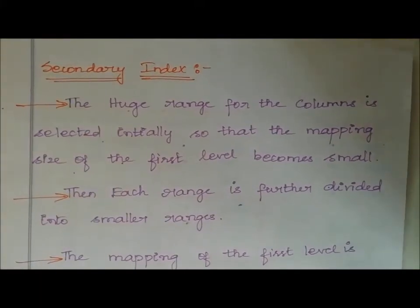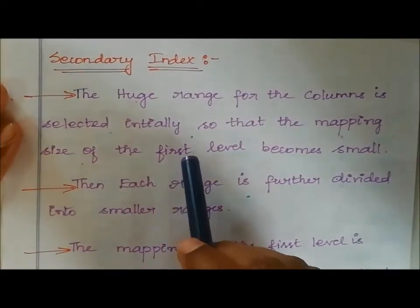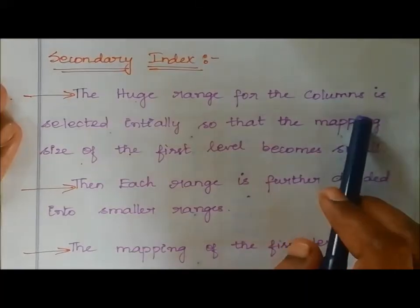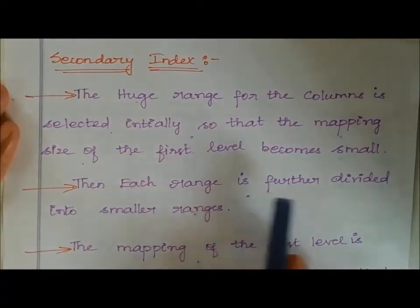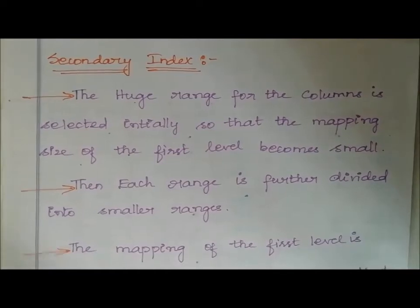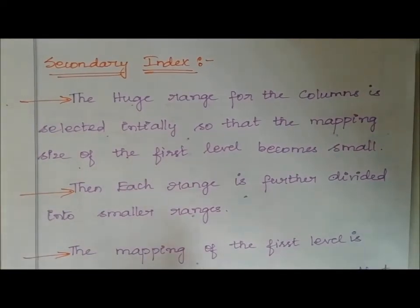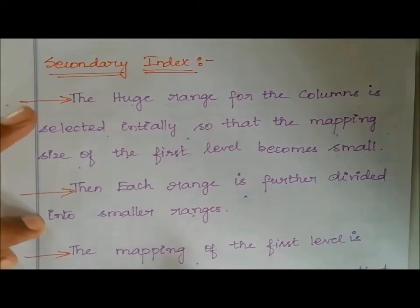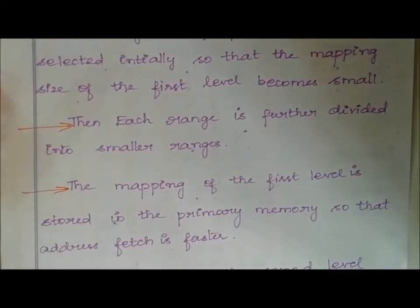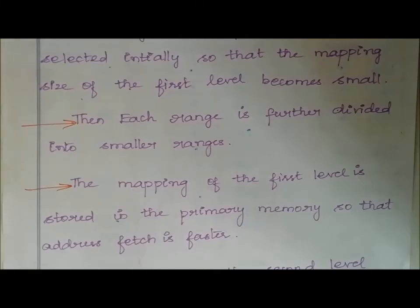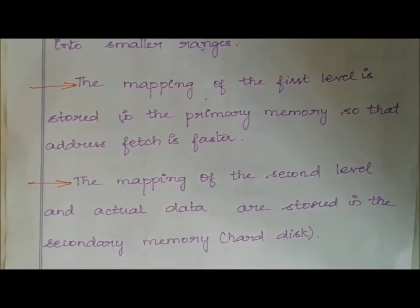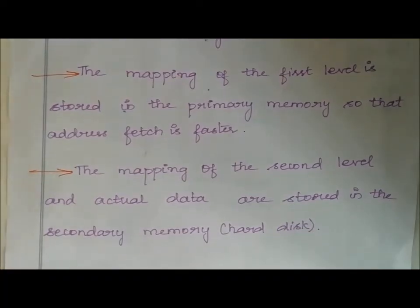Let's see the next indexing type: secondary index. A huge range for the columns is selected initially so that the mapping size of the first level becomes small. Then each range is further divided into smaller ranges. So there is a first level and second level indexing. The mapping of the first level is stored in primary memory so that addressing is faster. The mapping of the second level and actual data are stored in secondary memory — that is, the hard disk.